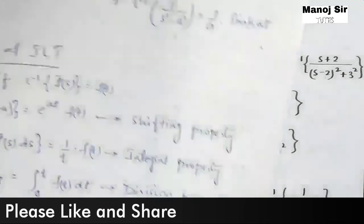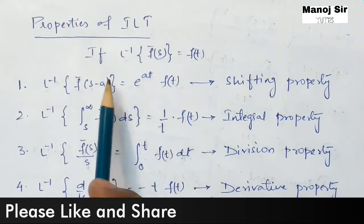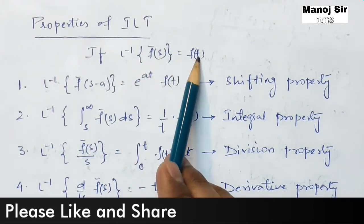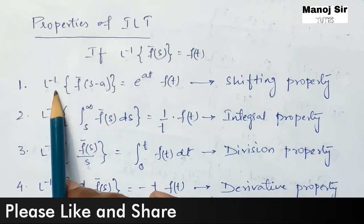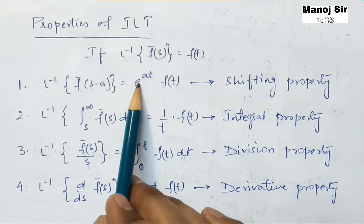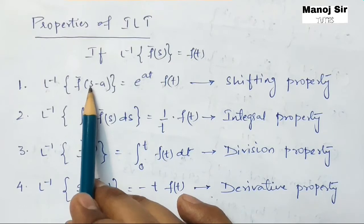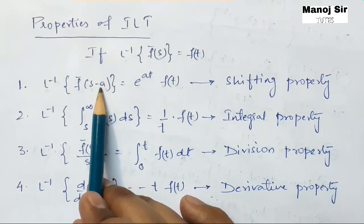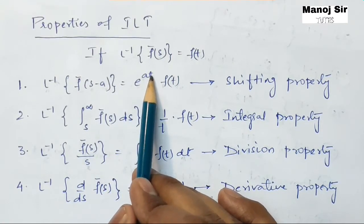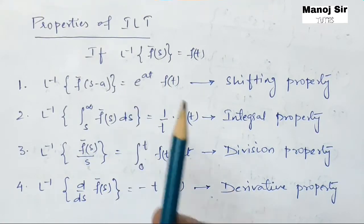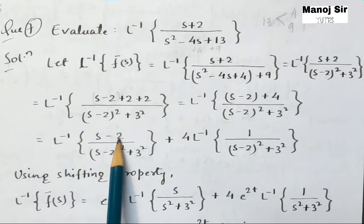Now we apply the shifting property of inverse Laplace transform. The property states: if the inverse Laplace transform of f̄(s) equals f(t), then the inverse Laplace transform of f̄(s − a) equals e^(at) · f(t). Note the minus sign: it is f̄(s − a), where a is the coefficient in the exponential part.